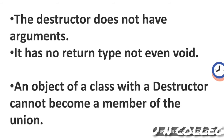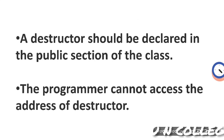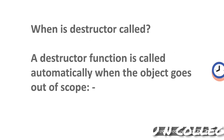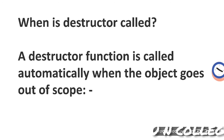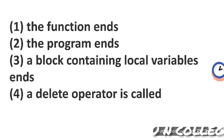The Destructor does not have arguments and has no return type — not even void. It cannot be declared as static or constant. An object of a class with a Destructor cannot become a member of a union. A Destructor should be declared in the public section of the class. The programmer cannot access the address of a Destructor. A Destructor is called automatically when the object goes out of scope: when the function ends, the program ends, a block containing a local variable ends, or a delete operator is called.